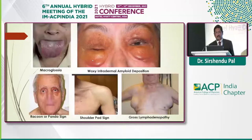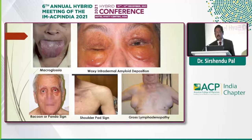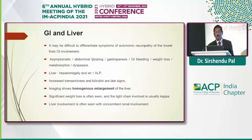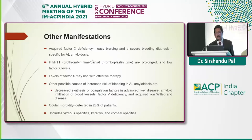Clinical manifestations that are pathognomonic, though rarely seen, include macroglossia, raccoon eyes sign — periorbital purpura — the shoulder pad sign, lymphadenopathy, and waxy skin with amyloid deposits. Due to vascular fragility and small vessel disease, there may be temporal artery involvement; do not confuse this with giant cell arteritis.